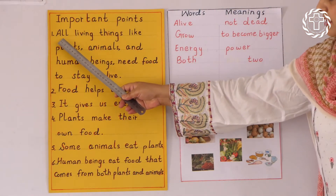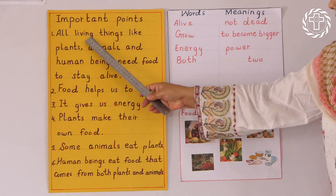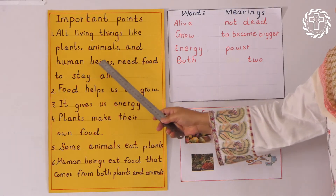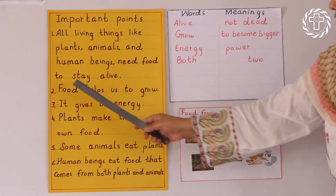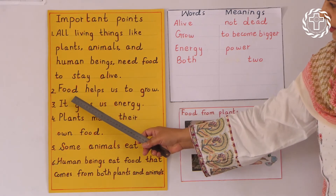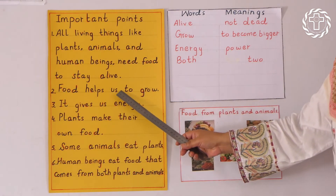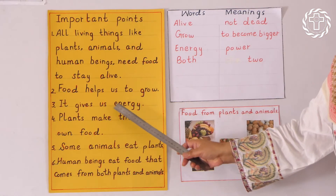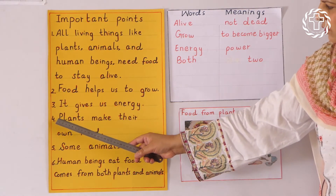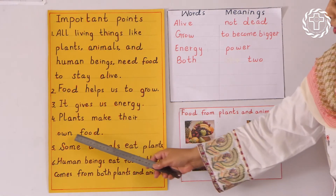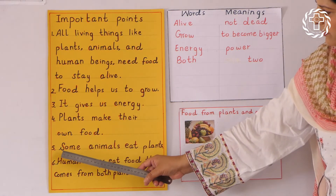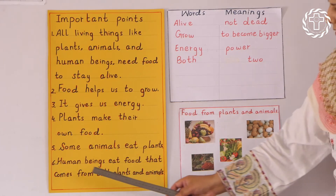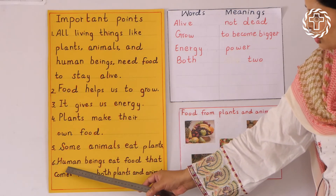These are the important points. First: all living things like plants, animals, and human beings need food to stay alive. Second: food helps us to grow. Third: it gives us energy. Fourth: plants make their own food.